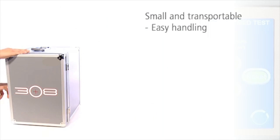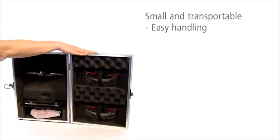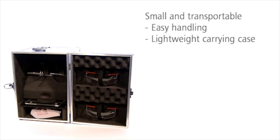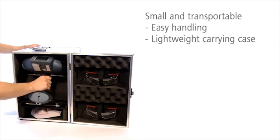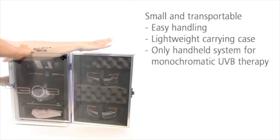It has been designed for optimal ergonomics. The compact carry case has space for everything you need, including accessories such as masks or protective goggles. This allows you to easily use this handheld system for monochromatic UVB therapy at various locations.